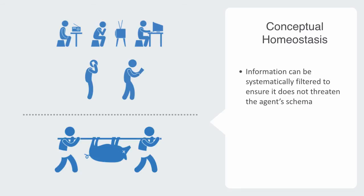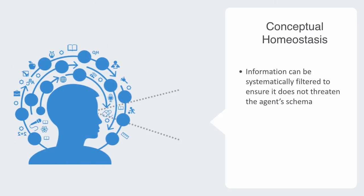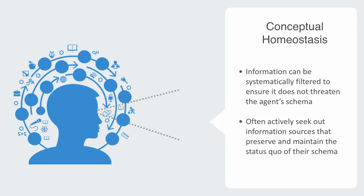Psychology has plenty of examples of this, such as confirmation bias, which is a tendency to search for or interpret information in a way that confirms one's pre-existing schema and placing much higher validation standards on information that threatens it. Thus, in the same way agents actively seek out environments that are conducive to their physical requirements, they will often actively seek out information sources that preserve and maintain the status quo of their schema.